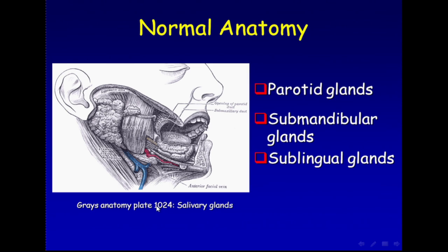Here we have the normal anatomy of the three main glands: the parotid gland, the submandibular gland, and anteriorly to it, the sublingual glands.